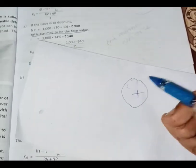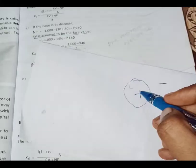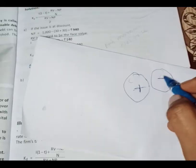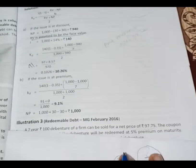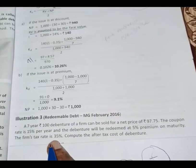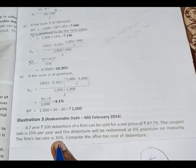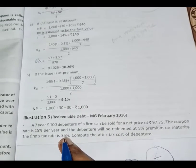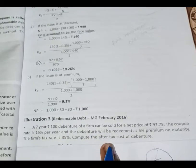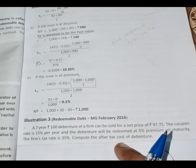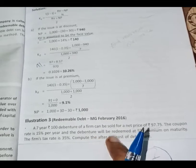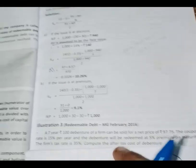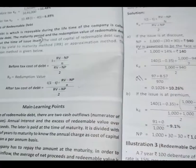Since there is a 5% premium on redemption, we add the premium to the face value to get the redemption value. A discount would be subtracted. The tax rate is 35%, so T equals 35 divided by 100, which is 0.35. The question asks us to compute the after-tax cost of the debenture, so we use the after-tax equation.